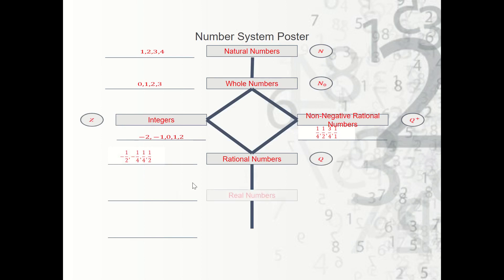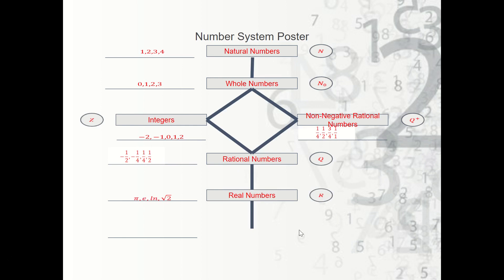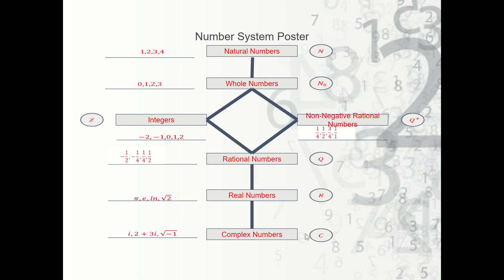After we learned about fractions, we learned that there are real numbers — numbers that can be found on the real number line but can't be written as fractions of integers. The symbol for real numbers is R, and some examples are pi, square root of two, e, and ln. After real numbers, we learned that there are complex numbers — the imaginary numbers. The symbol is C, and some examples are i, two plus three i, and the square root of negative one.